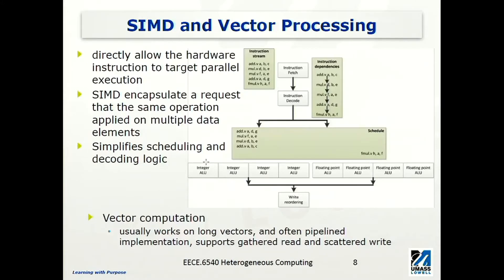If each element — A, D, G — each vector has four elements, this operation can then be completed within one cycle, because every element is going to be processed by this instruction as a single instruction. It simplifies scheduling and decoding logic.